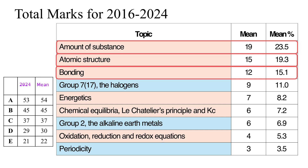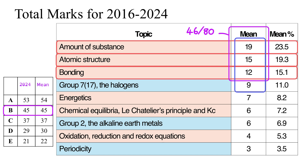If we consider the grade boundaries for both 2024 and on average across those nine papers, those three topics at the top — amount of substance, atomic structure, and bonding — would have got you 46 marks on average if you picked up all the marks from just those three topics alone. That would actually have been enough to get you a grade B from just those three topics. Adding fourth place, group 7, worth nine marks on average, takes us to 55 marks — enough to get a grade A on average and in 2024, from just those four topics out of nine.